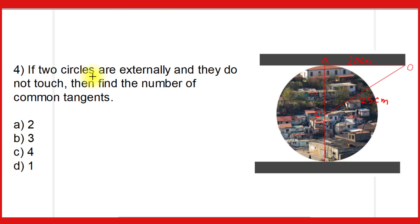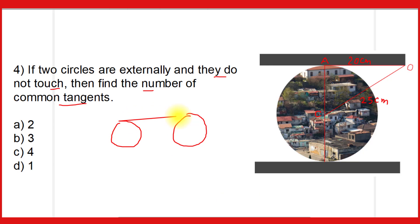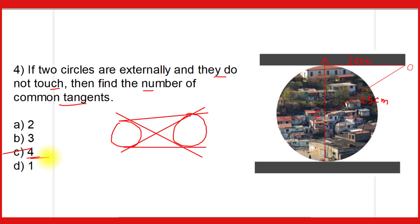The fourth question: if two circles are external to each other and do not touch each other, find the number of common tangents. For two such circles, the first common tangent can be drawn here, the second like this, the third like this, and the fourth like this. So four common tangents can be drawn to two circles that do not touch externally. Therefore option C is the correct answer.